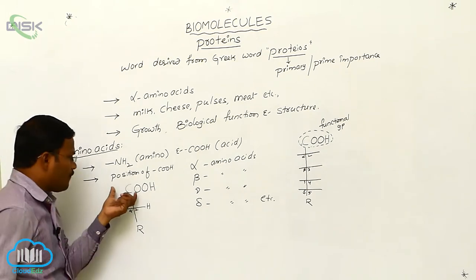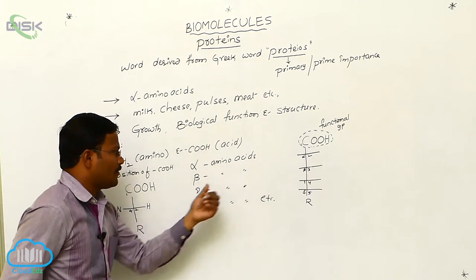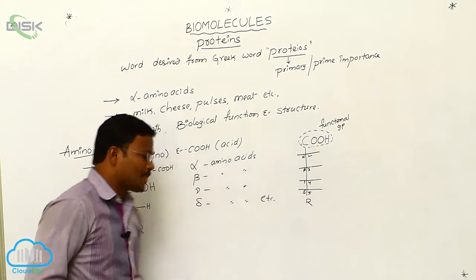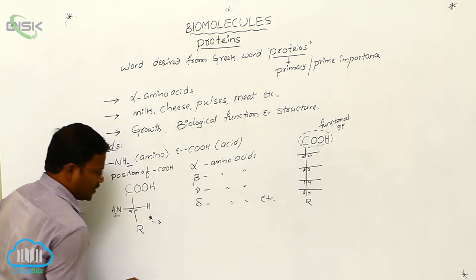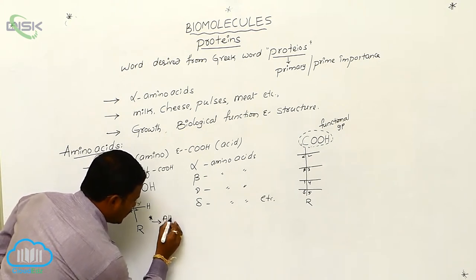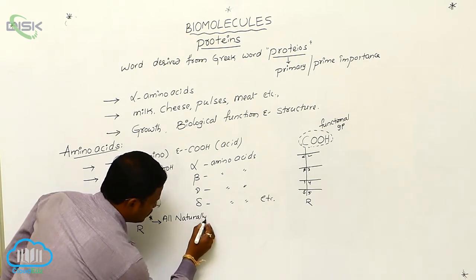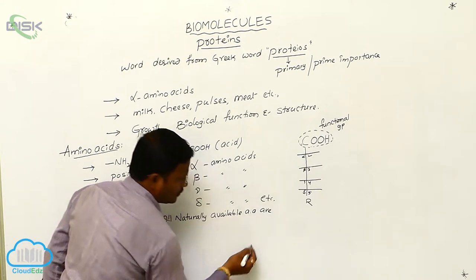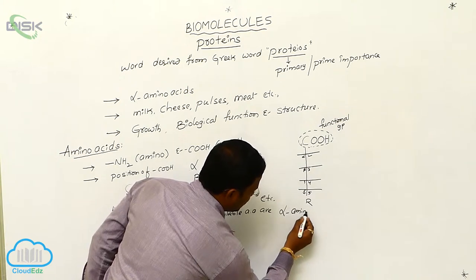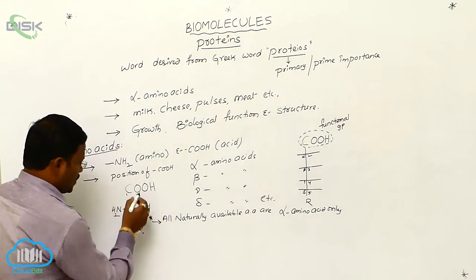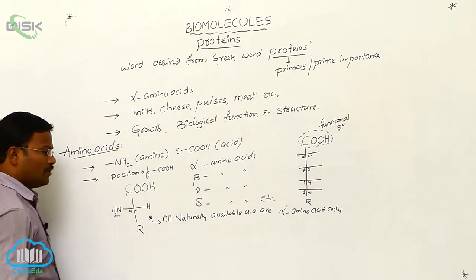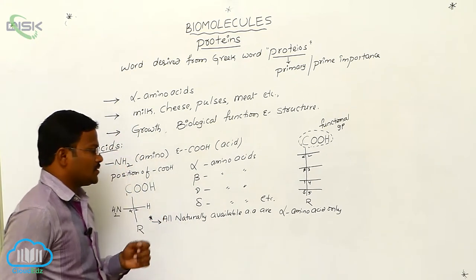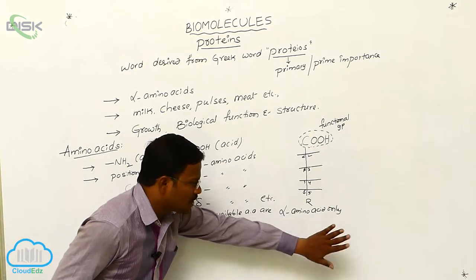With respect to the position of acid and amine, various types of amino acids are available — alpha, beta, gamma, and delta amino acids. One important statement to remember: all naturally available amino acids are alpha amino acids only. There is no natural availability of beta, gamma, or delta amino acids. So, prior importance goes to alpha amino acids only because these are the only ones available in nature.